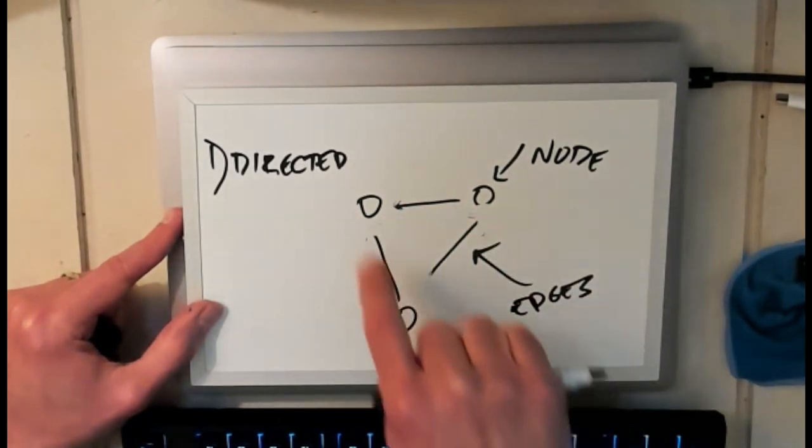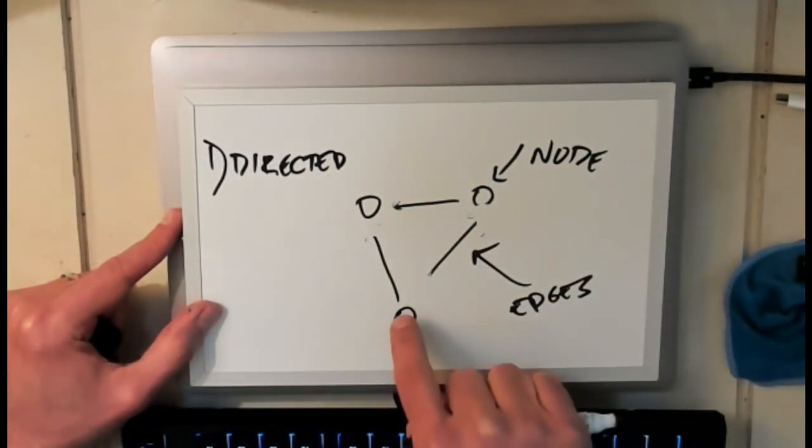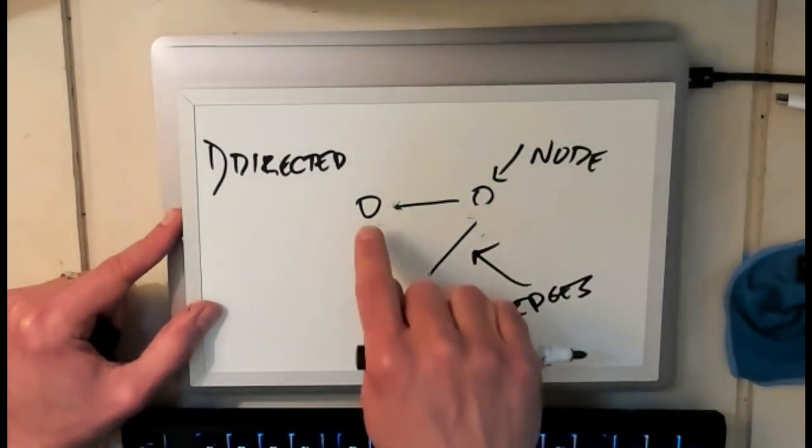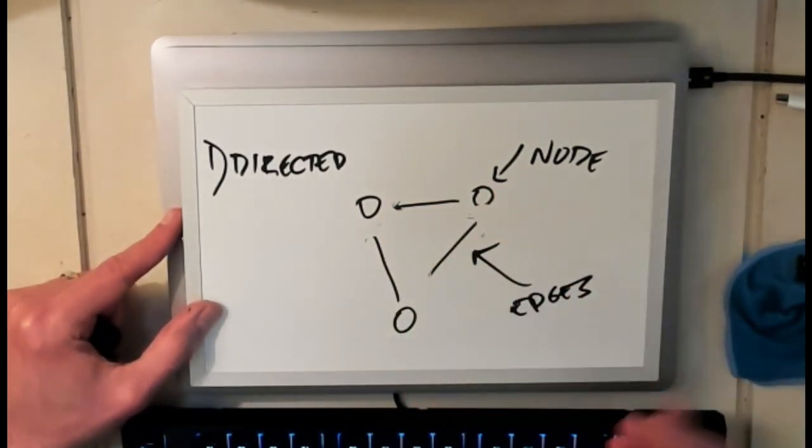So what do we mean by connected? I mean that I can reach all the other nodes from any node. So from here I get here and here. This is such a simple graph that it's trivial to see. In fact every node has the two other nodes as neighbors.